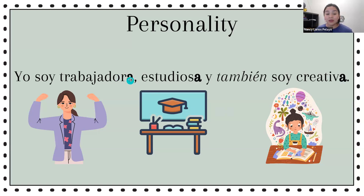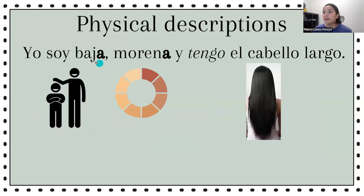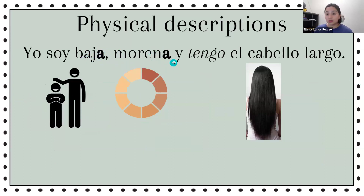If it were a male, you would say trabajador, estudioso, creativo — that A would change to an O. For example, baja becomes bajo, morena becomes moreno — to talk about a male who is short or brown-skinned. Y tengo el cabello largo — tengo means 'I have,' so 'my hair is long,' 'I have long hair.' El cabello largo.